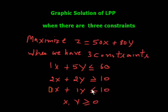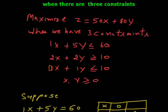Hello dear friends, today one of my students has asked me the graphic solution of LPP when there are three constraints. Suppose we have to maximize Z equals 50x plus 80y when we have three constraints. First condition is 1x plus 5y less than 60, second condition is 2x plus 2y more than 10, and third condition is 0x plus 1y less than 10. These are three conditions which we have to satisfy in the graph. So let's start.